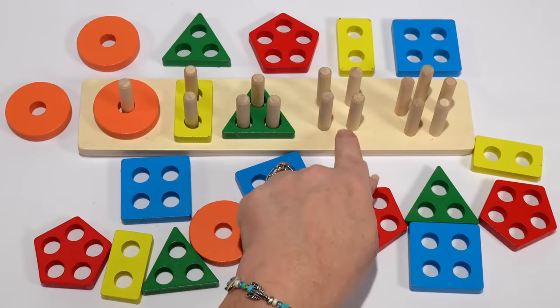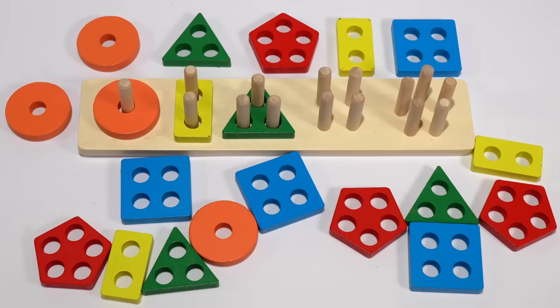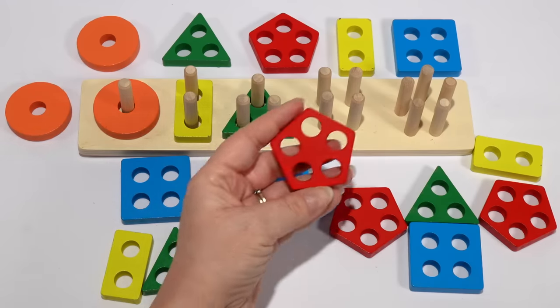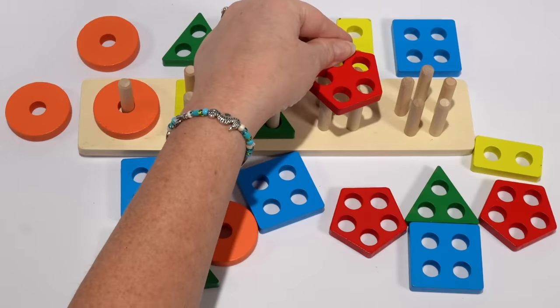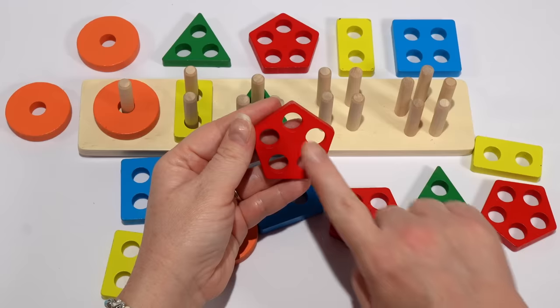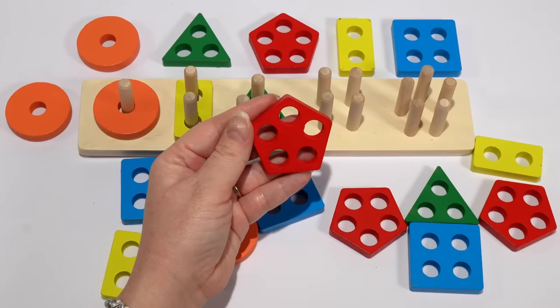Our next set of pegs has one, two, three, four. Do you see a shape that has four holes? Does this one have only four holes? No, it has one, two, three, four, five.